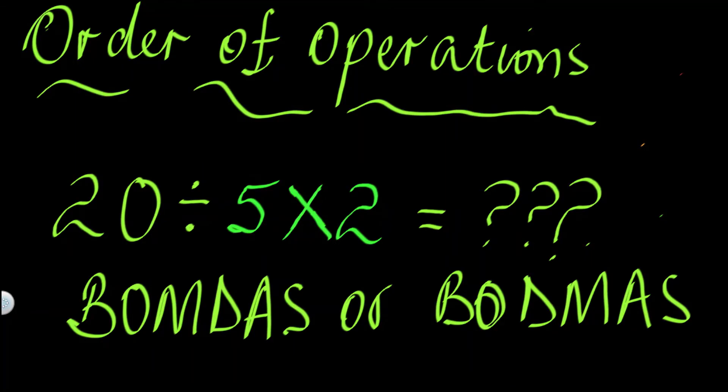If you give a group of math students a question like 20 divided by 5 times 2, you might get two different answers from the group, depending on how they applied the mathematical operations of multiplication and division.